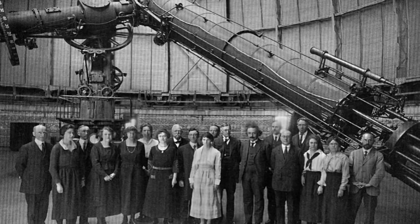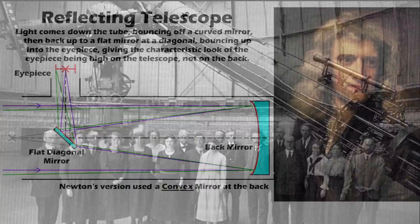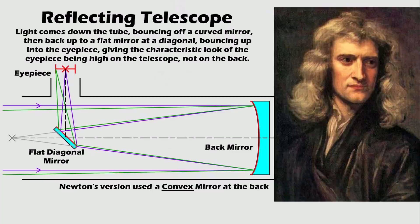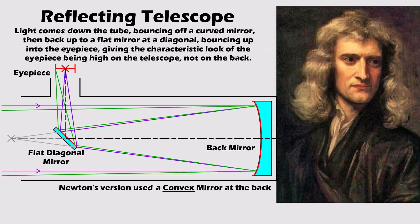Newton, meanwhile, developed his own approach to solving the Chromatic Aberration Problem, the Reflecting Telescope. Mirrors reflect all wavelengths of light by the same angle, without dispersion, so reflecting scopes focus light using a curved mirror rather than a lens.